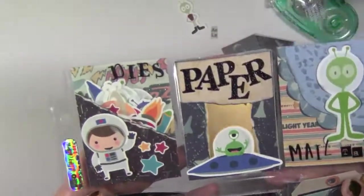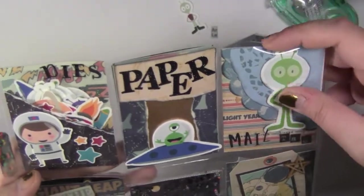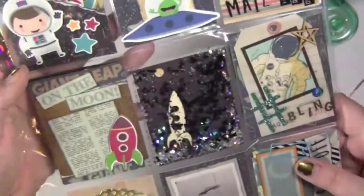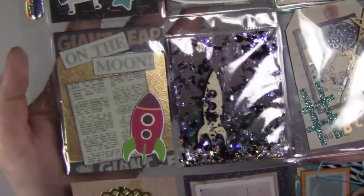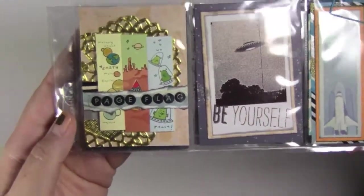And then here we have the final pocket letter. Looking back now I wish I would have put some washi or something to cover up that blank spot above the shaker pocket. But it's okay I guess.